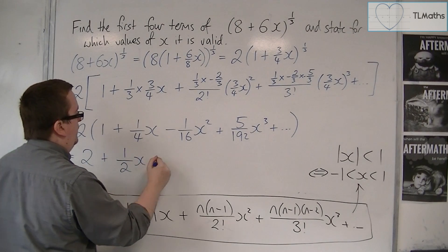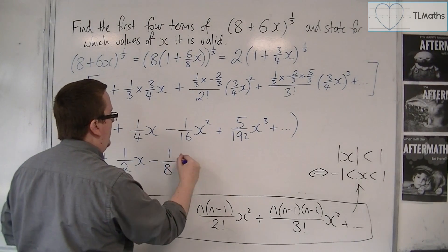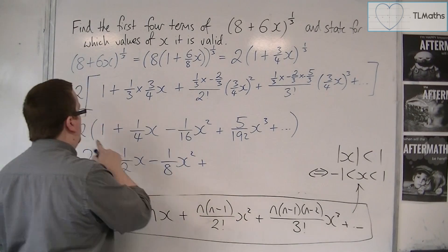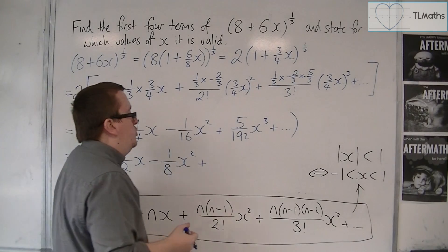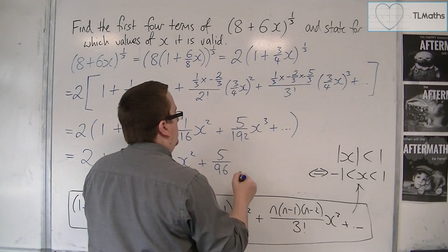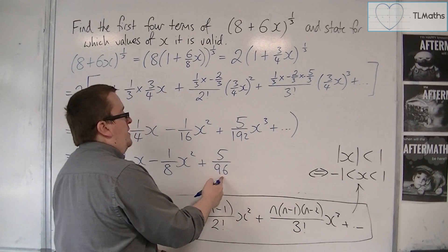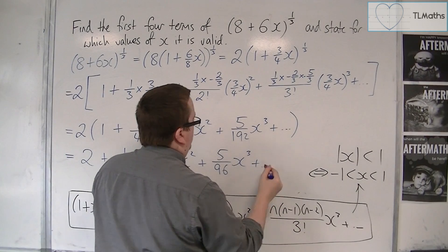So we get 2 lots of 1, we get 2 lots of 1/4, so 1/2 x, and then 2 lots of -1/16 is -1/8 x^2. Then we've got 2 lots of 5/192, which is 5/96 because 2 lots of 96 is 192.